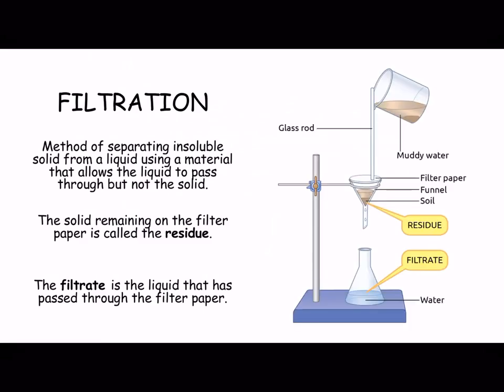As you can see here, we have muddy water and we're pouring it into a filter funnel with filter paper. Now the filtrate — in this case, the water — passes through the filter paper because the molecules are much smaller than the holes in the filter paper and can actually pass through. And the mud would remain as the residue on the filter paper.